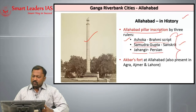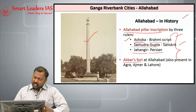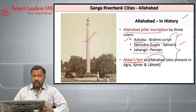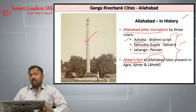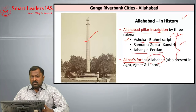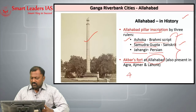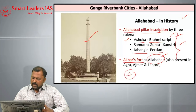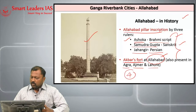Allahabad is also the place where Akbar built a fort — the red fort of Akbar was built in Allahabad. Akbar is known to have established four important forts in Allahabad, Agra, Ajmer and Lahore.